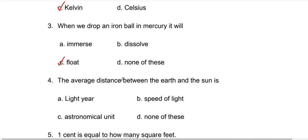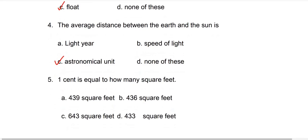Fourth question: the average distance between the earth and the sun is astronomical unit. That is the definition.